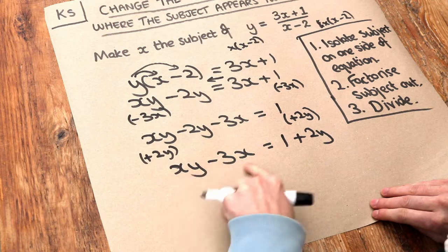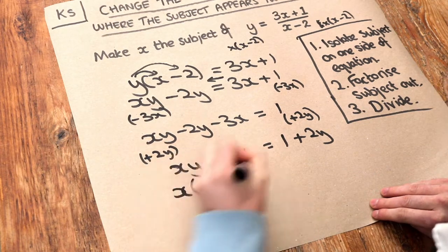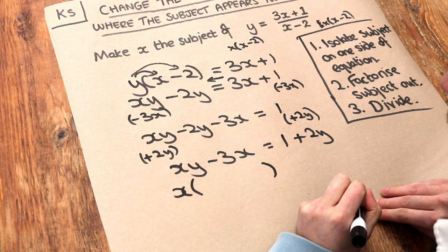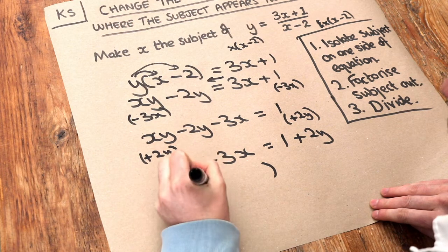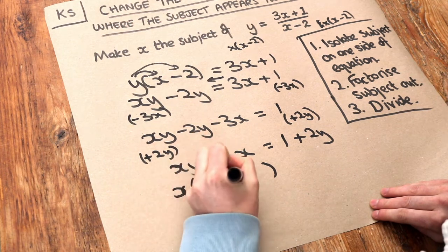Well, they both have x in common. So we can factorize out that x. x times what is xy? Well, it's y. x times what is minus 3x? It's minus 3.